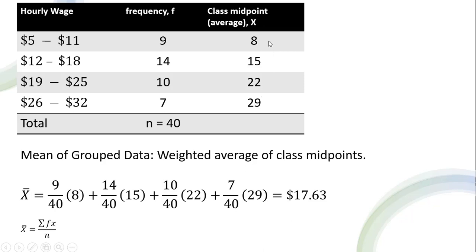So in this first class, where the midpoint is 8, 9 out of 40 of the observations belong to that class. In this second class, where the class midpoint is 15, 14 out of 40 of the observations belong to that class, and so on. So here's the calculation.